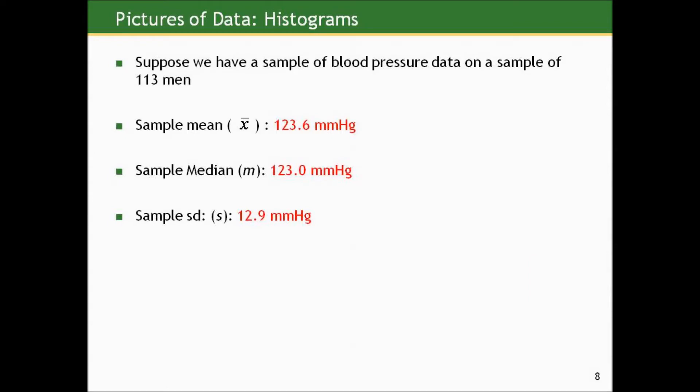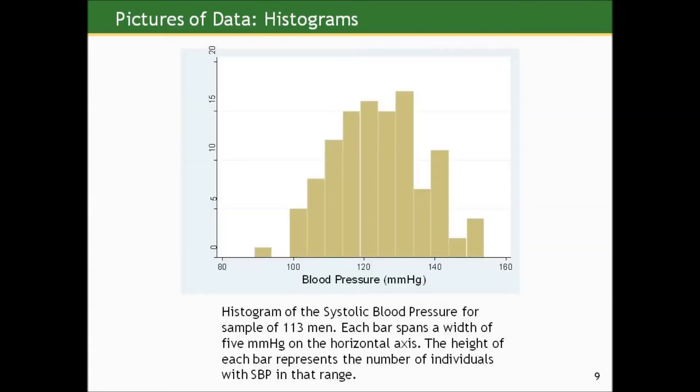Suppose we have a sample of blood pressure data on a sample of 113 men, and the sample mean is 123.6 millimeters, and the sample standard deviation is 12.9 millimeters. So we kind of know where things lie in terms of the middle and how much they're spread around that mean, but we don't necessarily know the shape of the data. Is it symmetric about that measure of center, or is it skewed to one direction or the other? And that's where a graphic will come in.